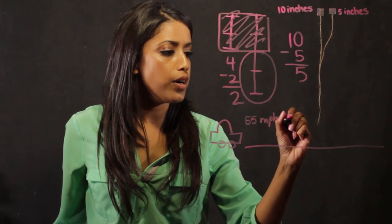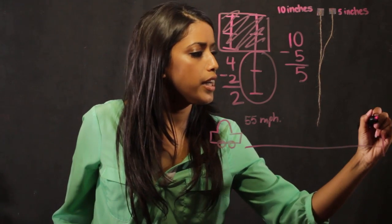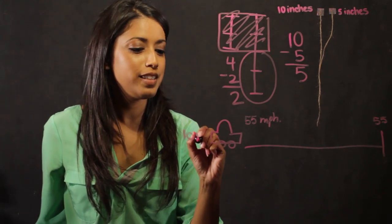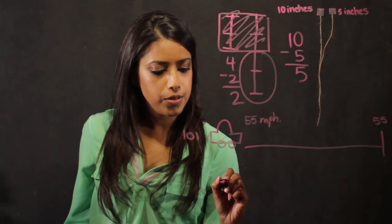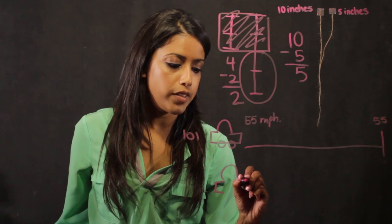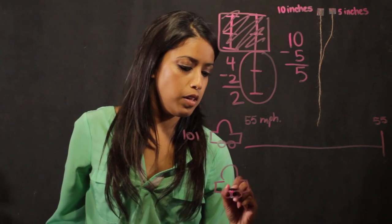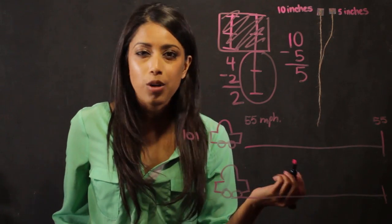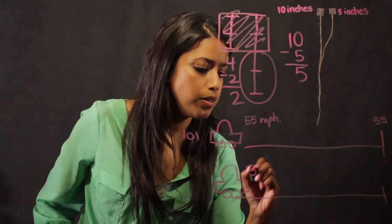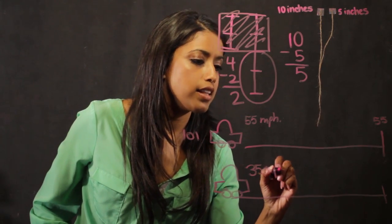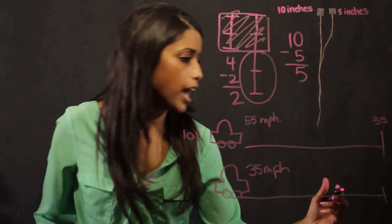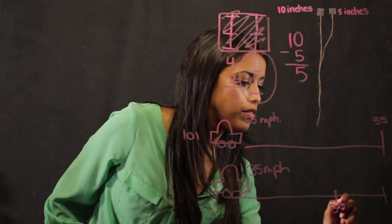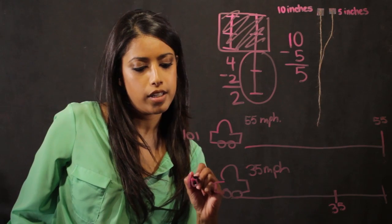So after an hour, he's reached here and he's gone 55 miles. And he's traveling on the 101. And let's say car number 2 is also traveling on the 101. And this car is going a little bit slow. Let's say he's only going 35 miles per hour. And again, let's assume that he's going to travel for an hour. He's going to be right about here at 35. And he's also traveling on the 101.